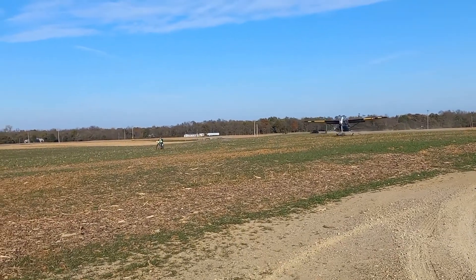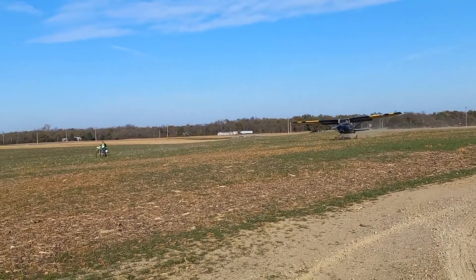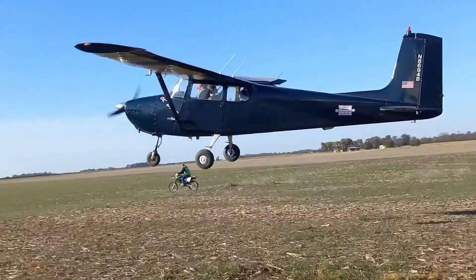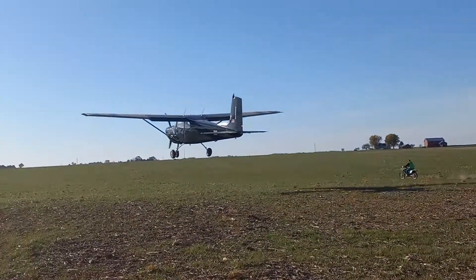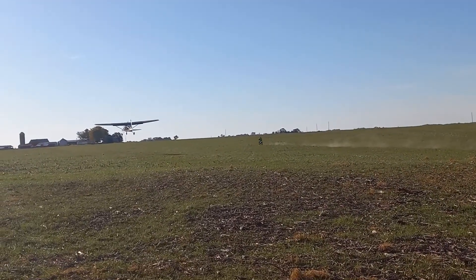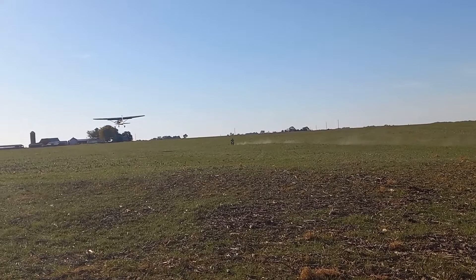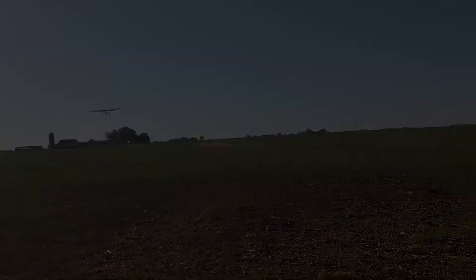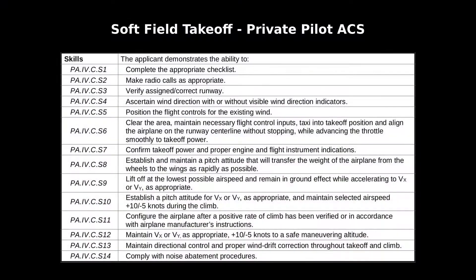The key objective of a soft field takeoff is to get the weight of the airplane off the soft terrain as quickly as possible. This reduces the length of the takeoff roll and also prevents the airplane from getting its nose wheel stuck in the soft terrain and possibly nosing over. To accomplish a soft field takeoff, we pull way back on the elevator and force the airplane into the air as soon as it's capable of flight.